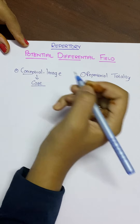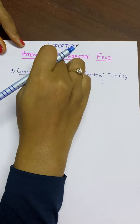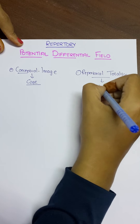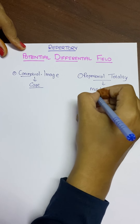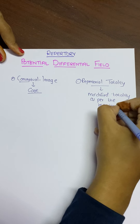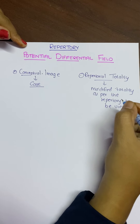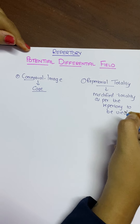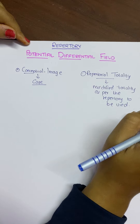What is Repertorial Totality? It is the modified totality obtained from the Conceptual Image, modified as per the repertory that we are using — that is, the modified totality as per the repertory to be used.